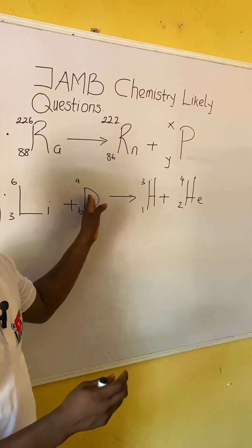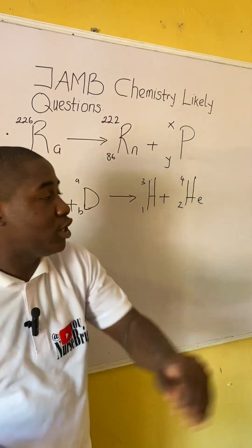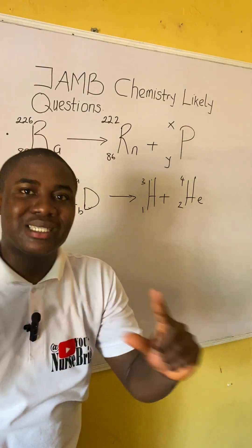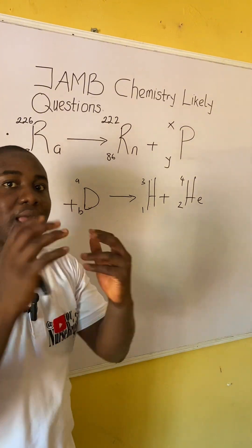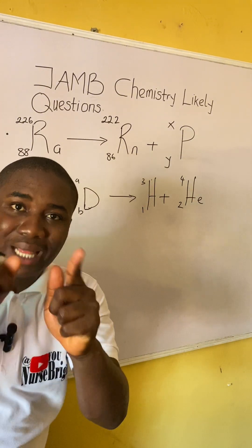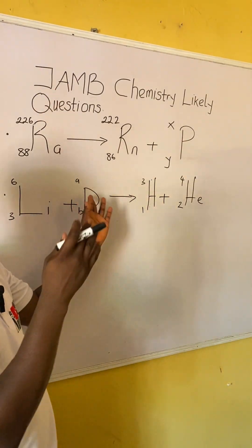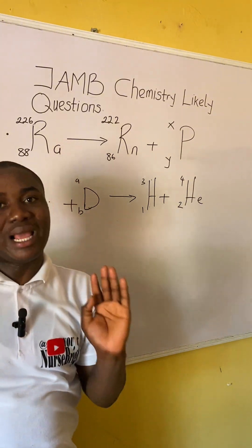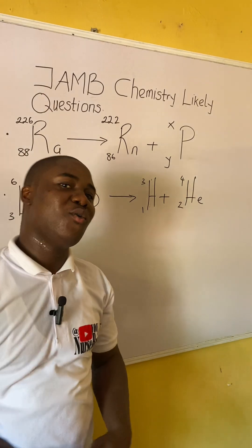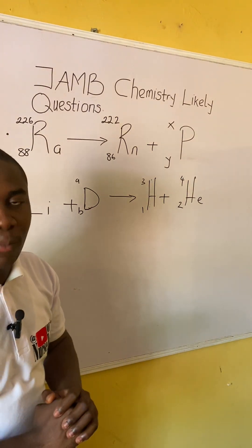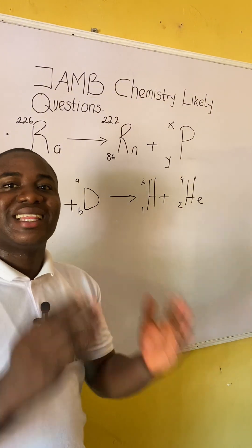At the end of solving, if the number arrangement you got matches the symbol of any radiation I explained, tell me the name of that radiation as well. Most importantly, show me how you balanced it. If you can identify the radiation from the number arrangement, that is even better. We've come to the end of this video lesson. If you found it helpful, click the subscribe button and share these lessons with your friends. Thanks for watching.